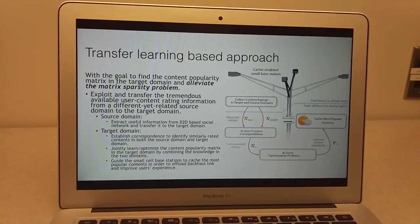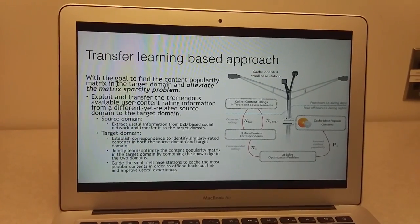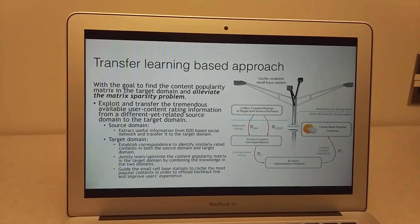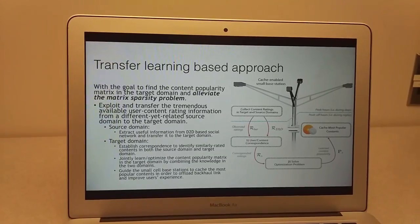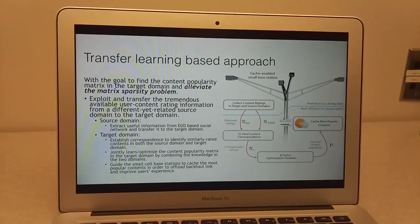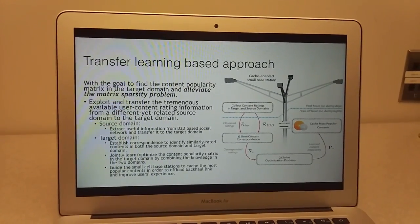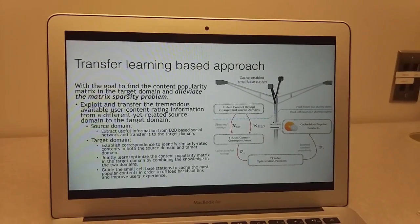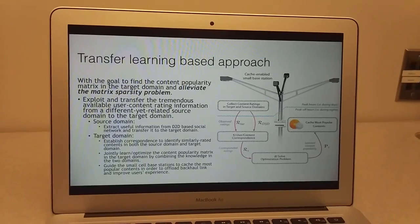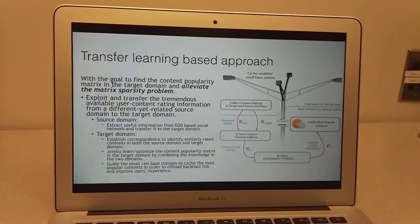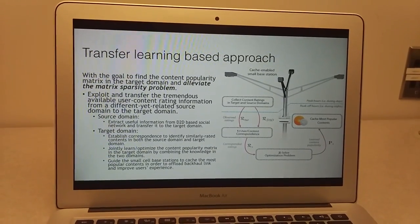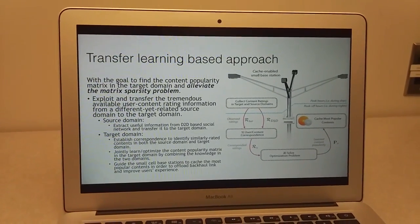In the source domain, it extracts useful information from D2D-based social networks and transfers it to the target domain. In the target domain, it first establishes the correspondence to identify similar related contents in both the source and target domains. After that, it jointly learns and optimizes the content popularity matrix in the target domain by combining the knowledge in these two domains.